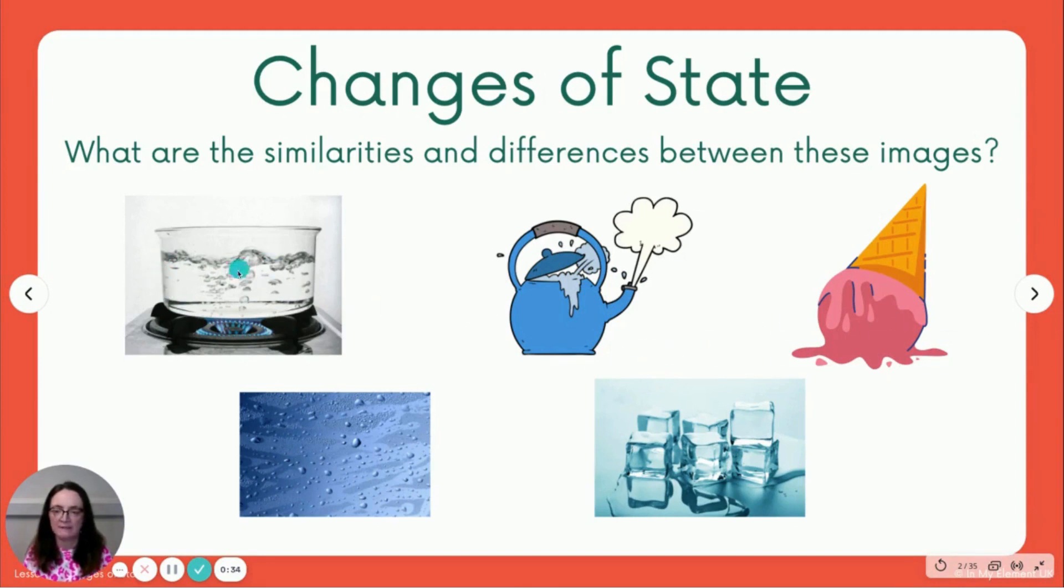So first off, we'll look at this one. What's happening here in this pan? Boiling is one. We might have liquid written down here as well, might have gas written for underneath this image here.